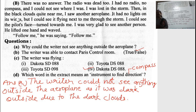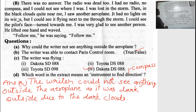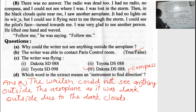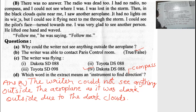The question is: why could the writer not see anything outside the aeroplane? The answer is: the writer could not see anything outside the aeroplane as it was dark outside due to the dark clouds. There was very dark cloud outside the aeroplane.